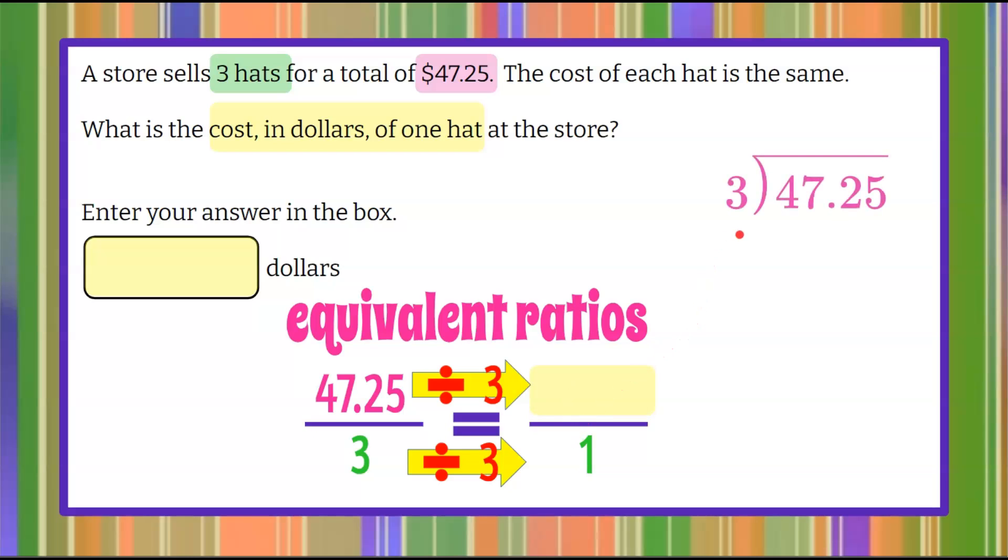Let's set up long division. $47.25 divided by three. We're going to take our decimal point, and it's going to go straight up. I'm ready to divide.